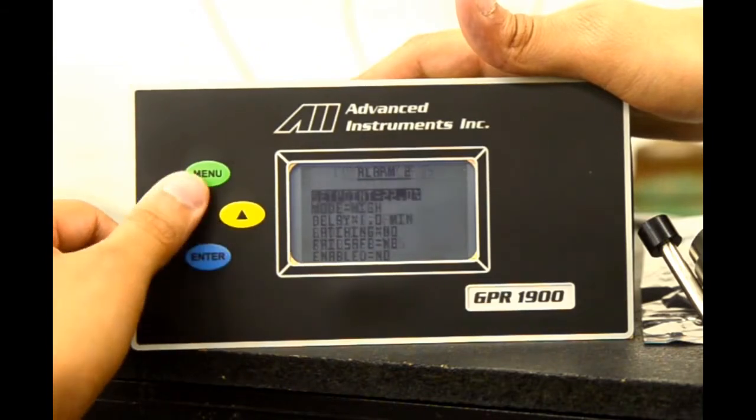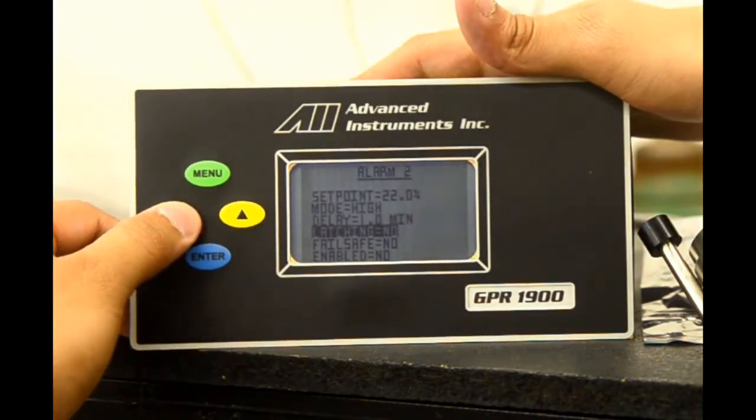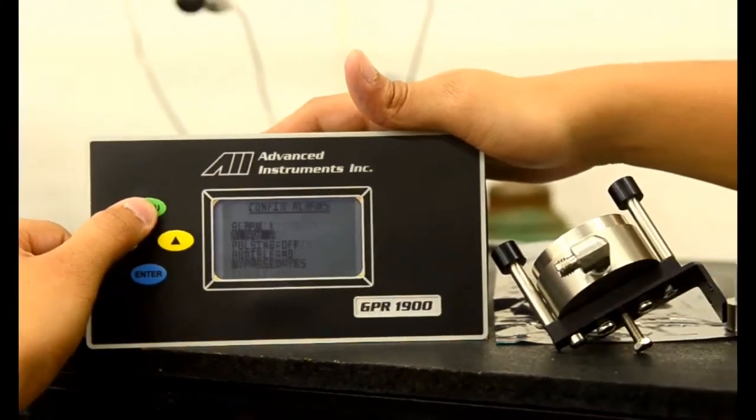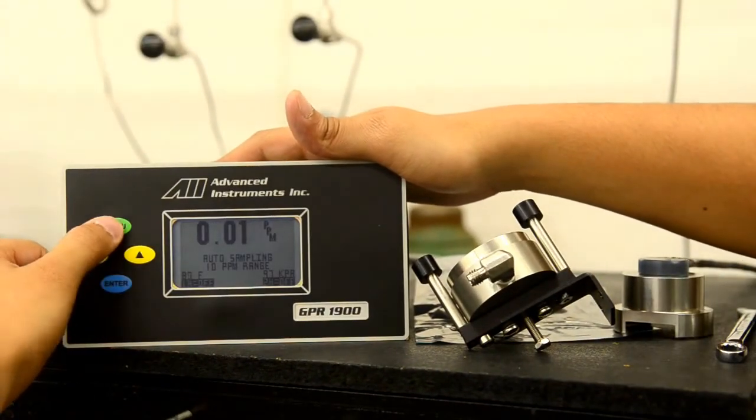We can configure alarm two in the same manner with the set point, mode, delay, latching, failsafe, and enabled options. We'll go back to the main menu. And you can see the alarm values are set at the bottom of the screen.